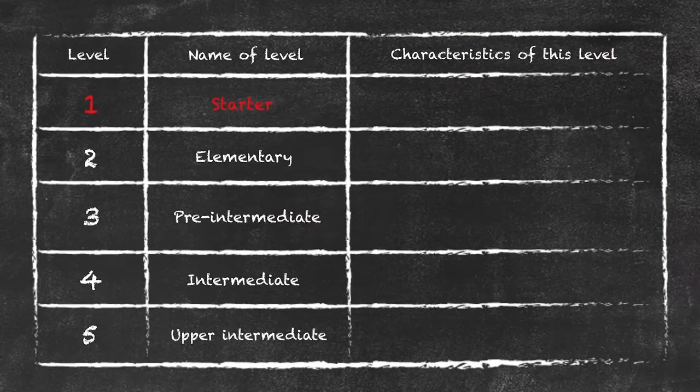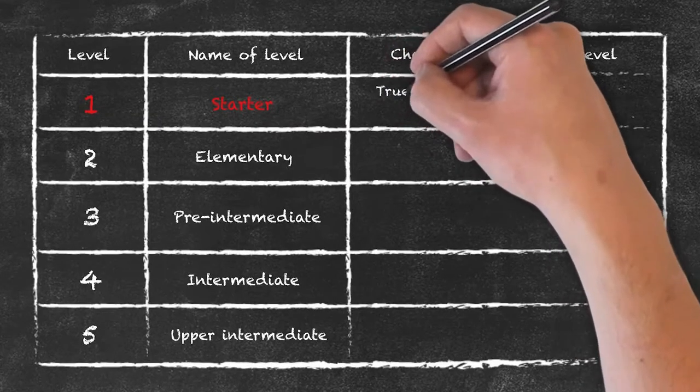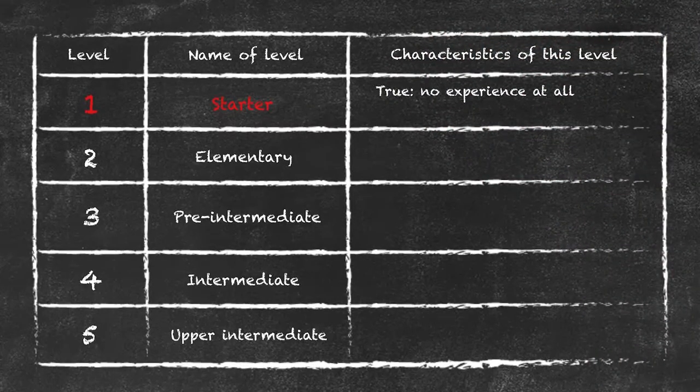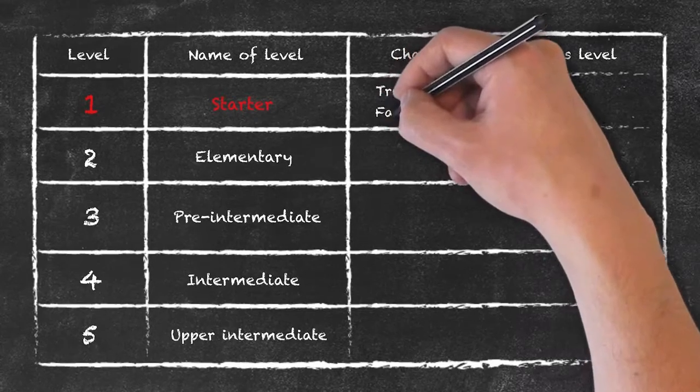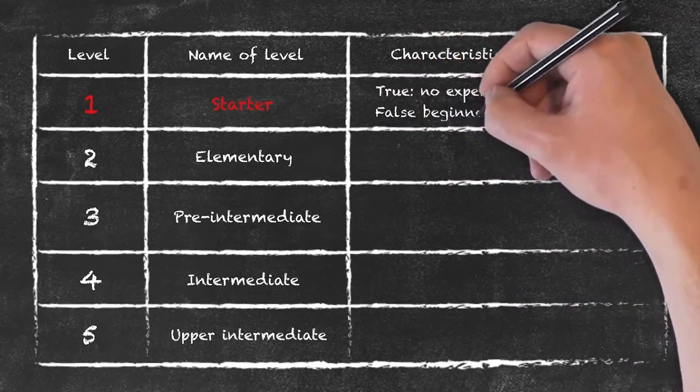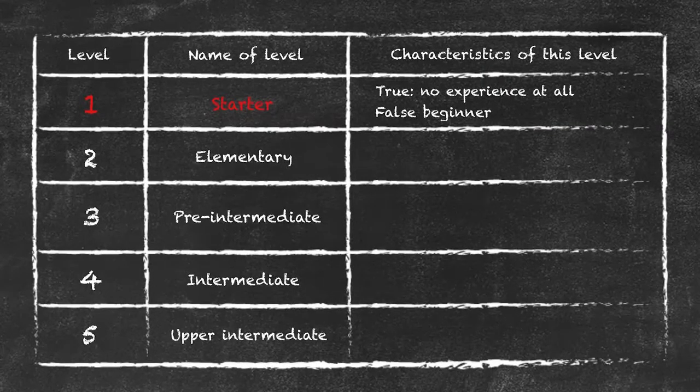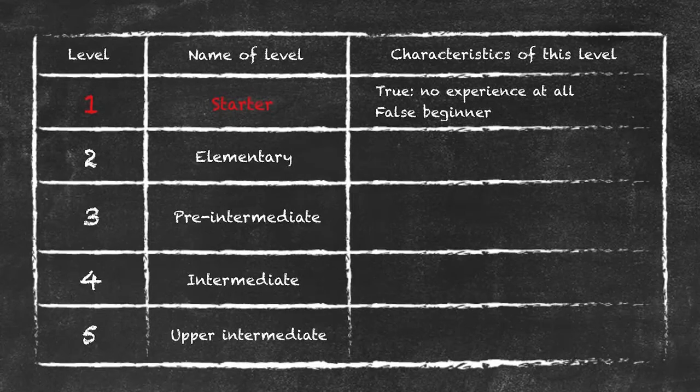Within the starter level there are actually two categories: true starters where they have no experience at all. If you can think of a language that you have absolutely no experience in and can't say a single word of, then you are a starter in that particular class. There's another category within this one though which we call the false beginner, and the false beginner learner has actually had some exposure to the language, be it through TV, radio, perhaps they've met tourists in a particular destination, or indeed perhaps they've been taught this language a long time ago and have not used it for a long time, but they're still in the starter level.